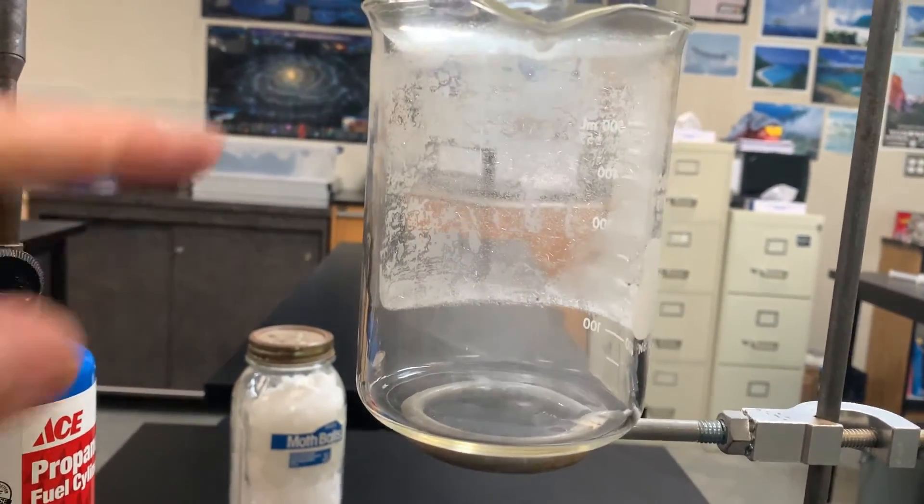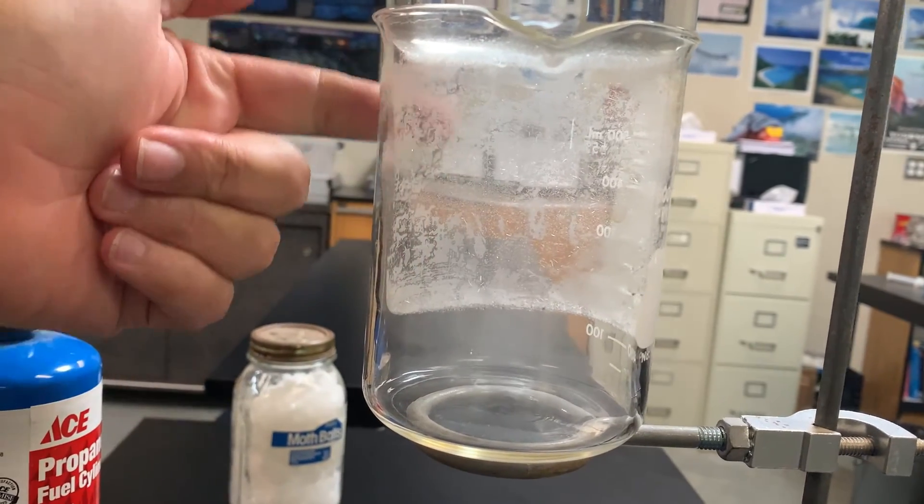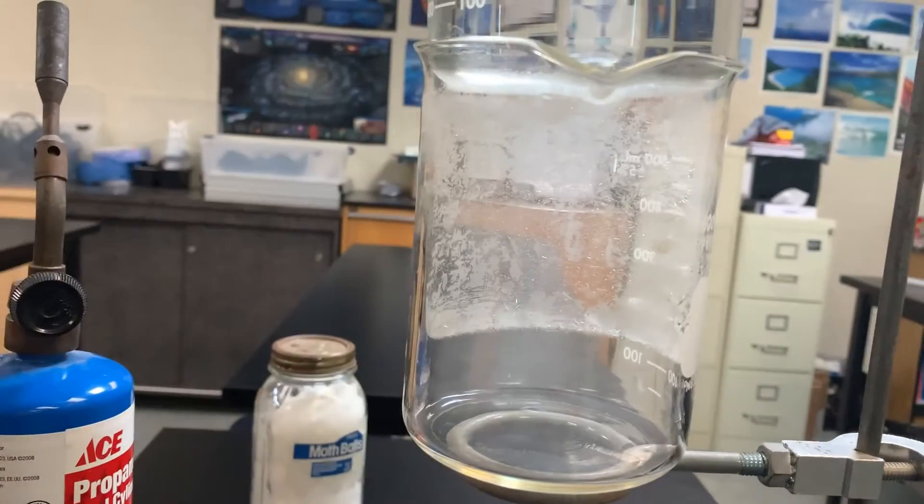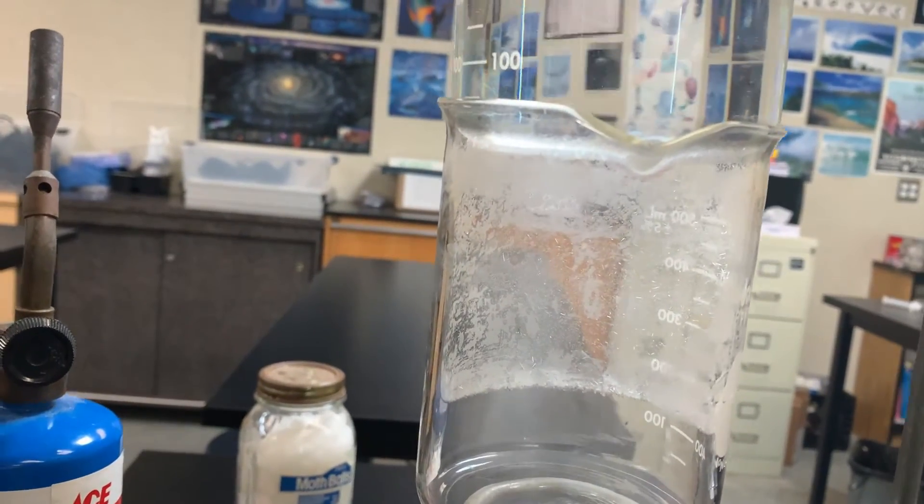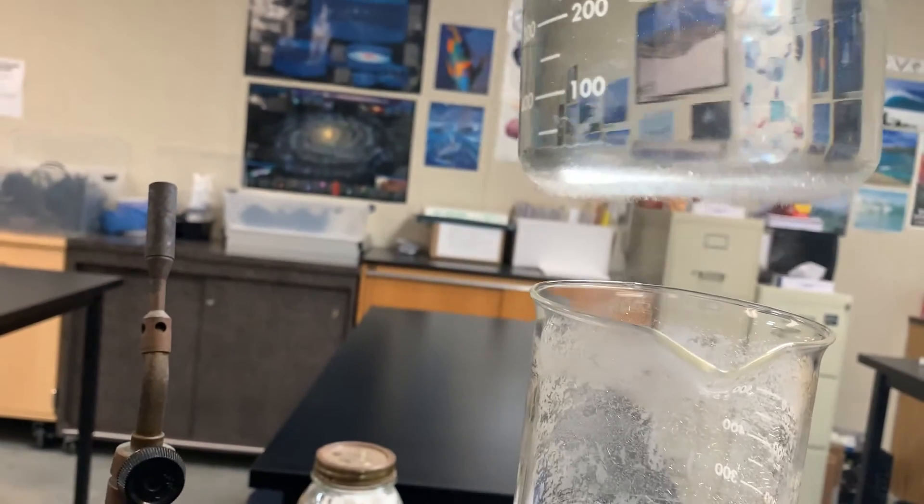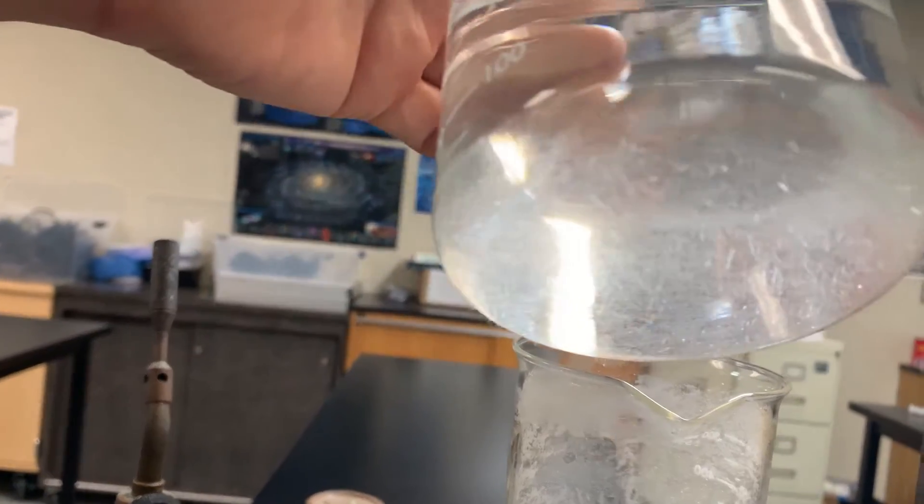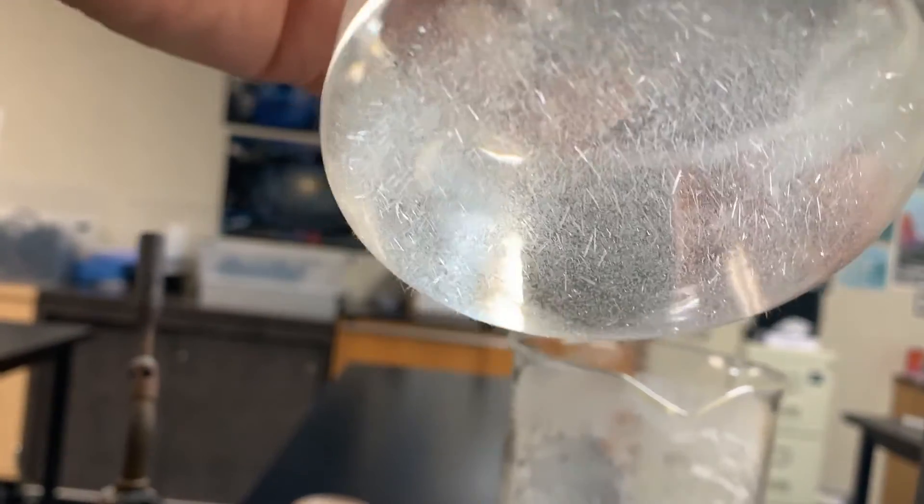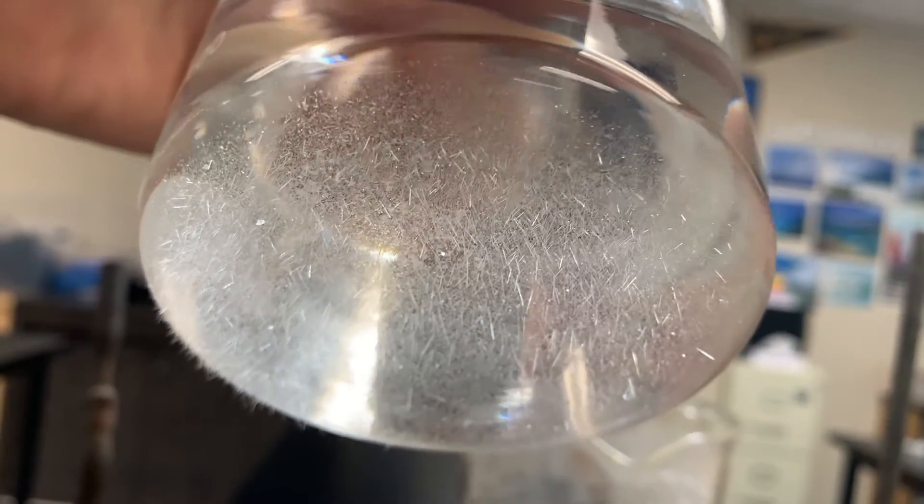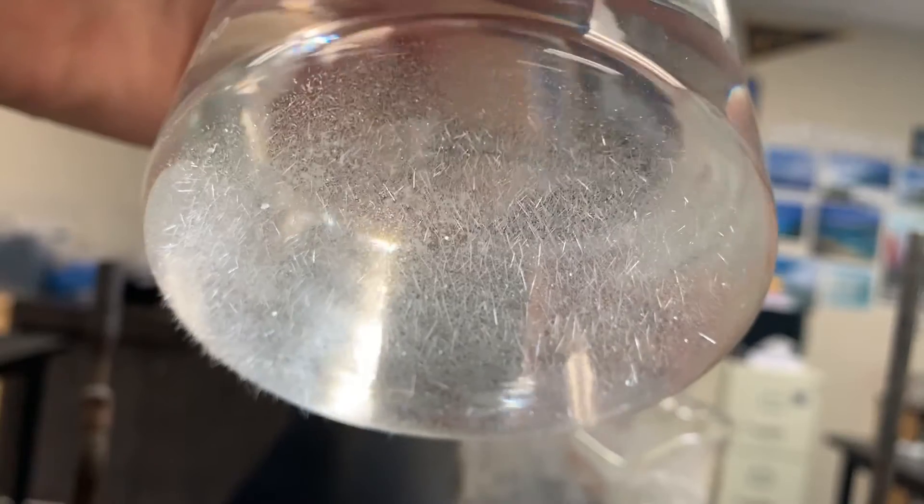But what I do see, what you can kind of see in the back here, there's a lot of crystals that have formed on the walls of the container. And especially when I lift up this beaker and I show you underneath here, it's really cool. You can see these awesome little crystals on the bottom right there. They're just like kind of long little fingers. They look like sharp little needles.